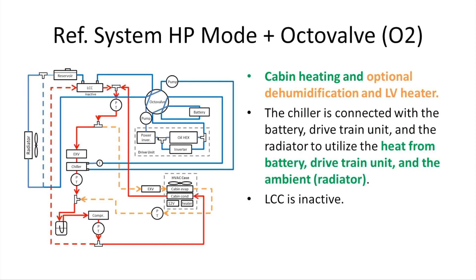This slide shows the mode when the refrigerant system is at heat pump mode and the octa valve is at O2 position. The cabin is heated by the cabin condenser, and the chiller is connected with the battery, the drivetrain unit, and the radiator to utilize the heat from the battery, drivetrain unit, and the ambient. The liquid-cooled condenser is inactive too.